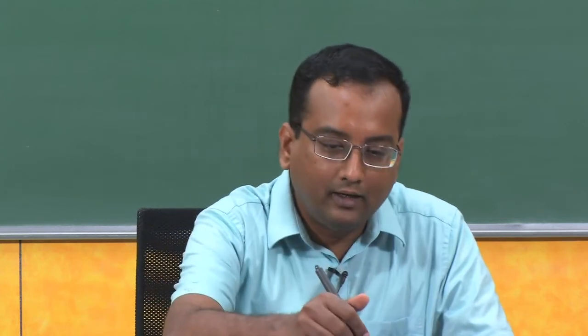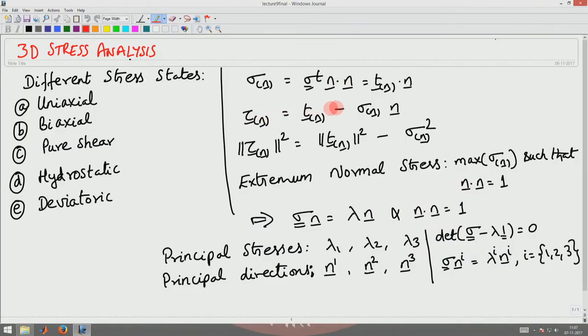The next state of stress was the deviatoric state of stress, wherein there is no volume change but only distortion in the body — it is like a pure shear state of stress and is a traceless tensor. We also looked at 3D stress analysis: the normal stress is the traction component acting along the normal direction to the plane, and the shear stress is the component acting parallel to the plane, with expressions given for both.